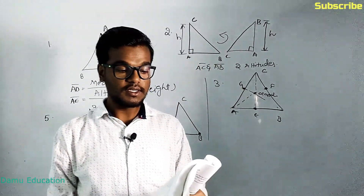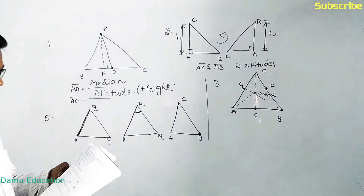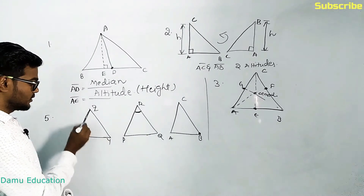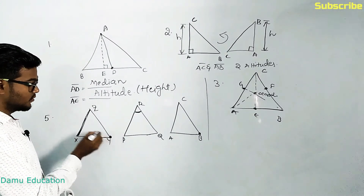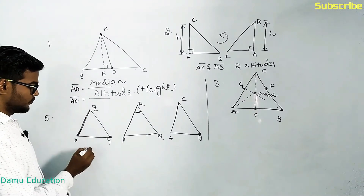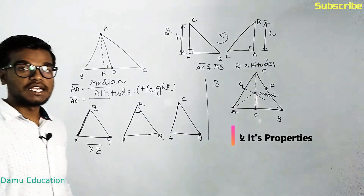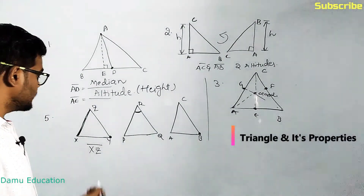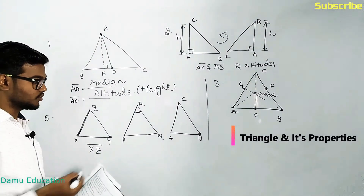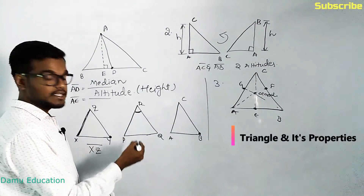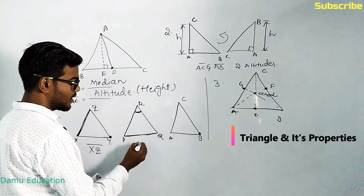The fifth question: write the side opposite to vertex Y in triangle XYZ. The opposite side is XZ, so XZ is the opposite side. Next, write the angle opposite to side PQ in triangle PQR. For side PQ, the opposite angle is angle R.